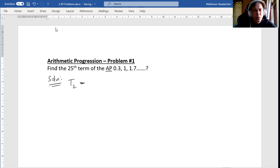We have to subtract term 2 minus term 1, which is 1 minus 0.3, which is 0.7. Then term 3 minus term 2 is 1.7 minus 1, which is also 0.7. That means the common difference d is 0.7.